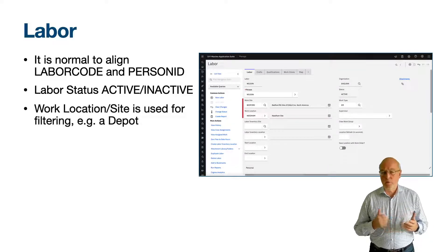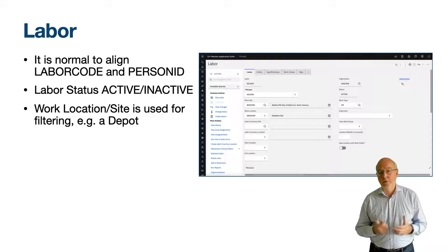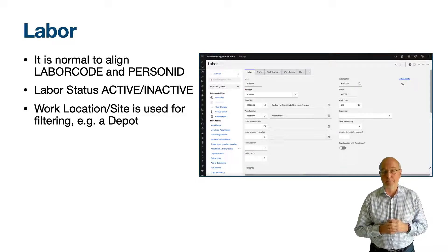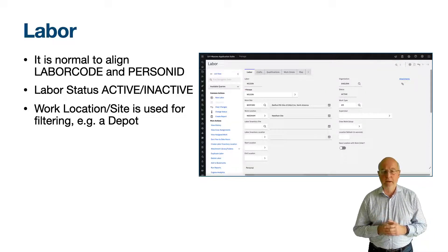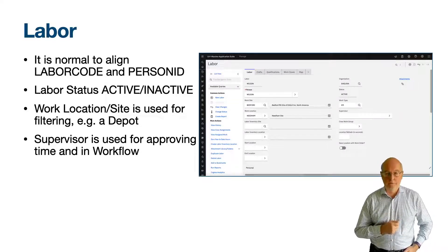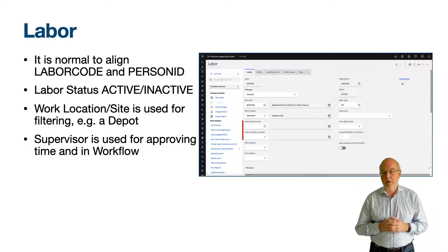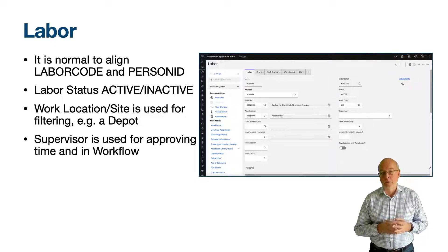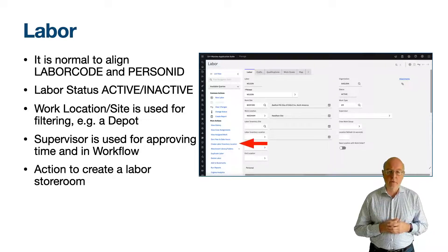The work location and work site identify the place where the labour normally works — for example, for utilities this would be their depot. It is used for filtering other labour who also work at the same place. The work type is an indicator of the work type that the labour normally performs; it isn't used in Maximo but could easily be configured into lookups for filtering. The supervisor field is on the person record rather than the labour record and is normally the person who approves time records or workflow requests. The two fields, labour inventory site and labour inventory location, allow you to record stock for a person — for example, facilities engineers who carry stock in their van.